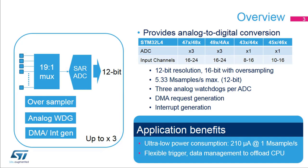There are up to three ADCs and 16 to 24 analog inputs depending on the device. The ADC module itself is a 12-bit successive approximation converter with additional oversampling hardware. Under certain conditions, the oversampled output can have a 16-bit result. The sampling speed is more than 5 mega samples per second. Each ADC module integrates three analog watchdogs. The data can be made available either through DMA movement or interrupts. This ADC is designed for low power and high performance. There are a number of triggering mechanisms and the data management can be configured to minimize the CPU workload.